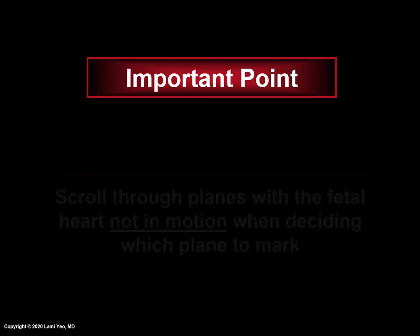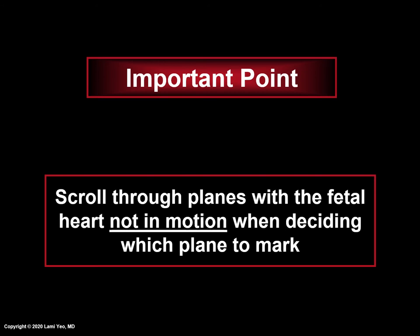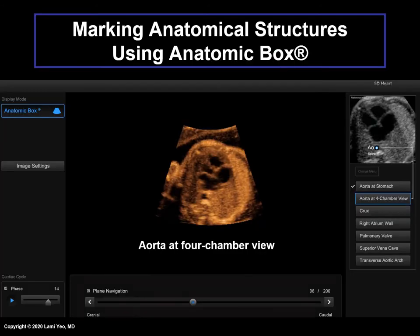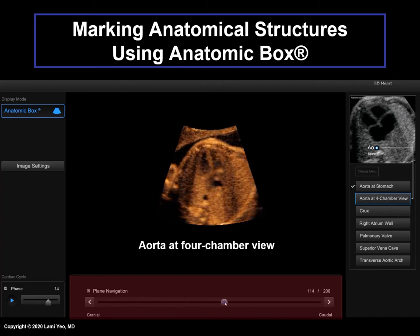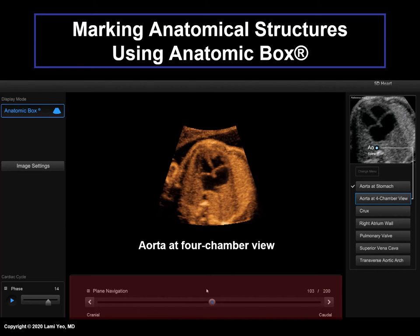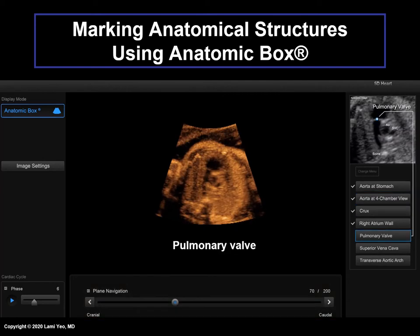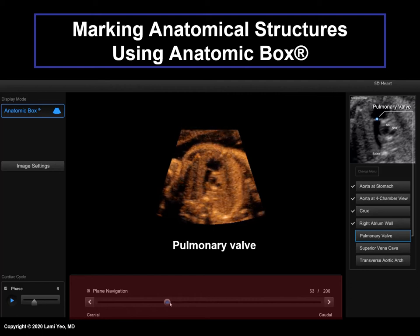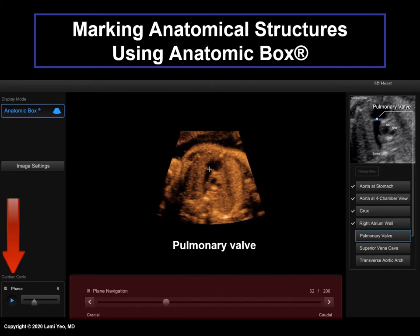An important point is that we strongly recommend scrolling through the planes with the fetal heart not in motion when deciding which plane to mark. Here, the user is scrolling through the planes to determine which is the best plane to mark the aorta at the level of the four-chamber view, and the heart is not in motion. This is strongly recommended because all marking guidelines have been developed based on the fetal heart not in motion. It is also acceptable to momentarily pump the fetal heart to identify the pulmonary valve before marking.